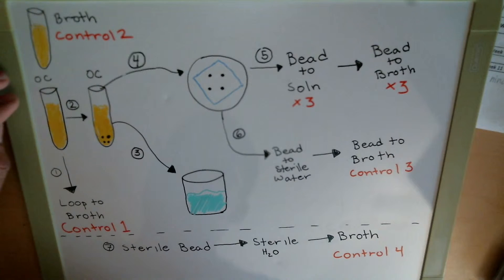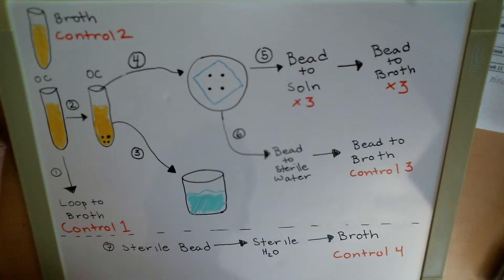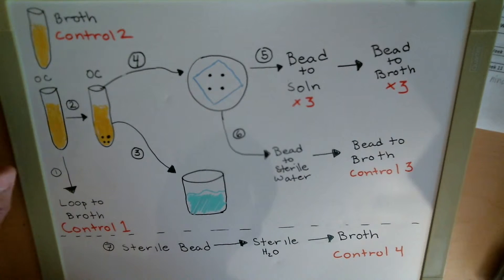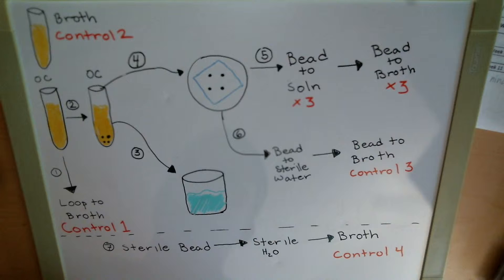When you first get your materials, you'll have your original culture — your bacteria — and a few nutrient broths to help the bacteria grow. Immediately take one of those broths and label it as Control 2. With your original culture, flame a loop, put it into the original culture, and inoculate that into one of the broths. Label that as Control 1, put it next to Control 2, and you're done. We'll get into what the controls mean a little later.